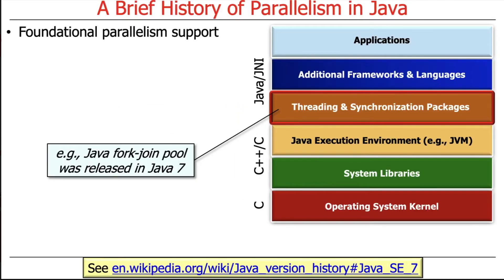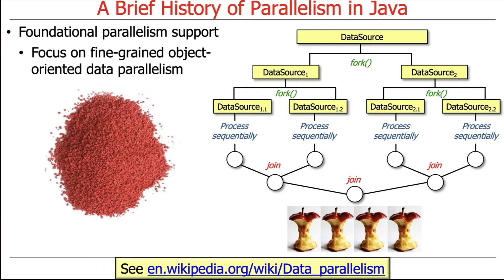The foundational support for parallelism in Java occurred in the Java 7 timeframe, around 2010, when the fork join pool was released. The fork join pool provided fine-grained, object-oriented data parallelism. It was fine-grained because you could split things into small chunks, object-oriented because the splitting was based on inheriting from classes and overriding methods, and it performed data parallelism by partitioning data into subtasks and running them in parallel.